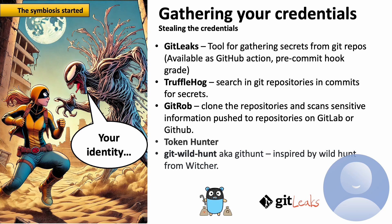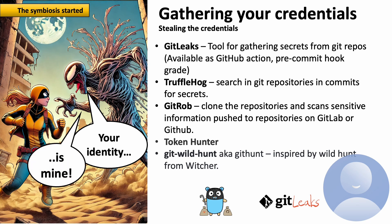One of them is git-leaks, a tool for gathering secrets from GitHub repos. It can detect secrets and prevent you from committing them, supporting pre-commit hooks — a very good tool. Another tool that works a little differently is TruffleHog, a search tool that allows you to identify high entropy strings — very random strings — in your code. Another interesting tool is Gitrob, based on Golang; it clones a repository and scans for sensitive information pushed to GitLab or GitHub.